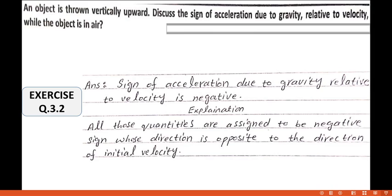So why can we say that the sign of acceleration is negative? All those quantities are assigned to be negative sign whose direction is opposite to the direction of initial velocity.